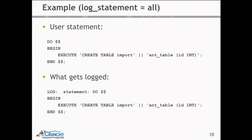No schema is given here; this is using the default search path, so this table is going to end up in public. But it could end up somewhere else if they had set the search path earlier — and how would we know? Here's what gets logged with log_statement equals all: Postgres just parrots back exactly what we gave to it. That's not very helpful in the case of auditing where we want to look for very specific things.